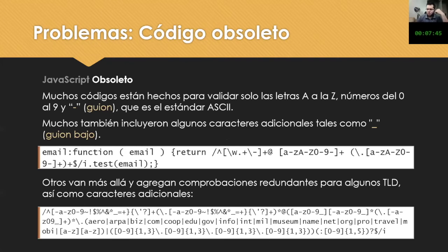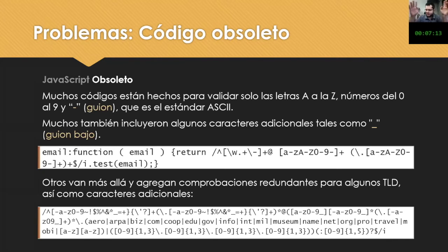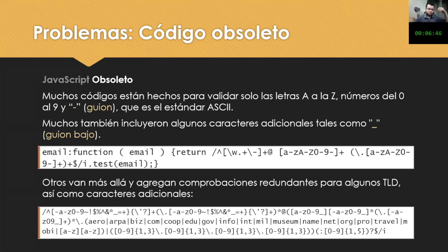Regarding the front-end, there are also issues. One of the main things is obsolete code. We have a great diversity of implementations — JavaScript — but many, many sites use code that has been made to validate just a specific part of the scripts, with letters from A to Z and numbers from 1 to 9. Examples from our research show that for developers, these are very simple and do not take into account many things, and sometimes they are not successful when validating domains.